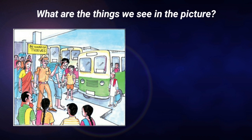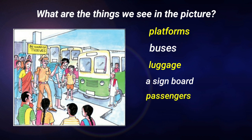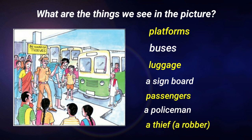What are the things we see in the picture? Platforms, buses, luggage, a signboard, passengers, a policeman, a thief. Another word for a thief is a robber.